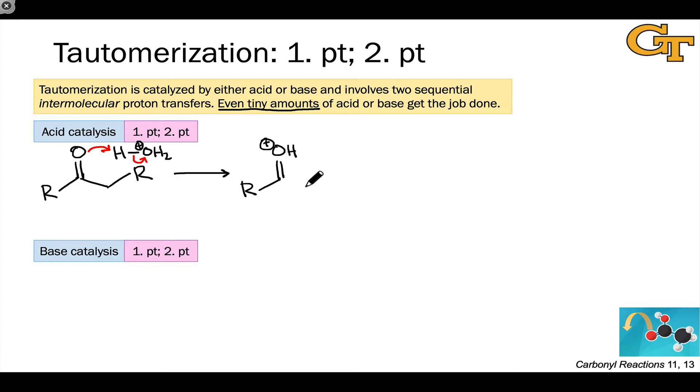And the intermediate we have is the conjugate acid or protonated form of the carbonyl group, the protonated keto form, we might say, using the language of tautomers. At the same time, we generated the conjugate base of the catalyst, in this case, water.